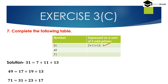Verification: 7 + 11 = 18, 18 + 13 = 31. Alternatively, we can write 31 = 3 + 5 + 23. The numbers 3, 5, and 23 are all prime numbers, and 7, 11, and 13 are also all prime numbers.